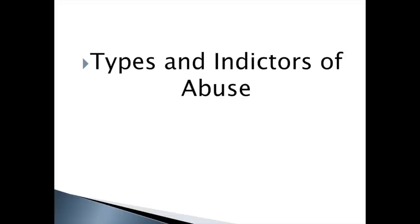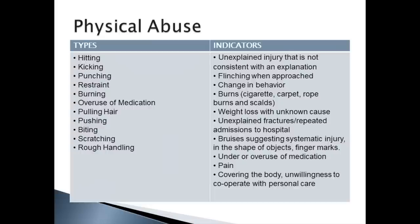Types and indicators of abuse. We'll start with physical abuse. Types of physical abuse can include hitting, kicking, punching, restraint, burning, overuse of medication, pulling hair, pushing, biting, scratching, and rough handling.